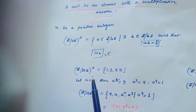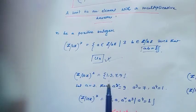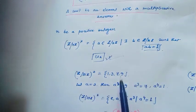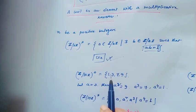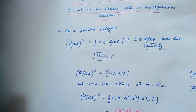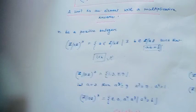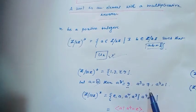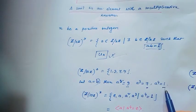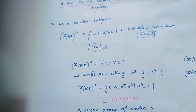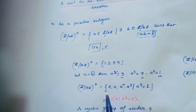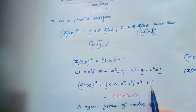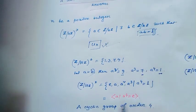For example, consider Z mod 10Z star — this contains the multiplicative inverses of Z mod 10Z, which are {1, 3, 7, 9}. If we take a equal to 3, then a squared equals 9, a cubed equals 7, and a to the power 4 equals 1.